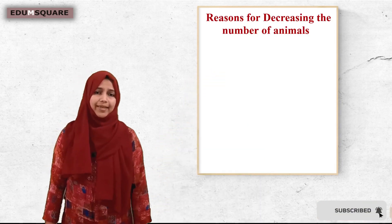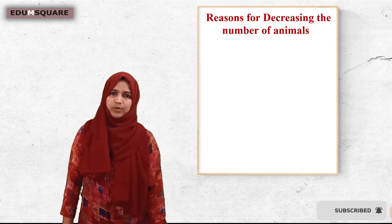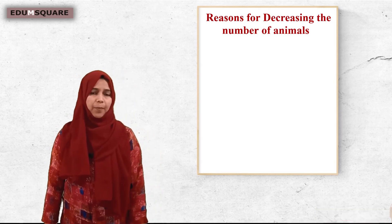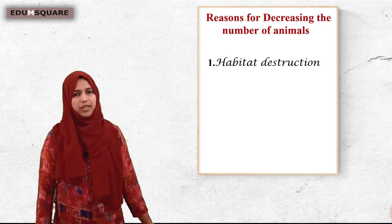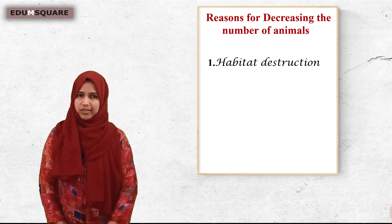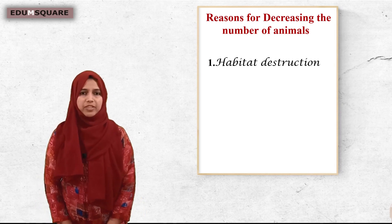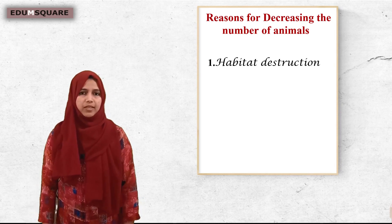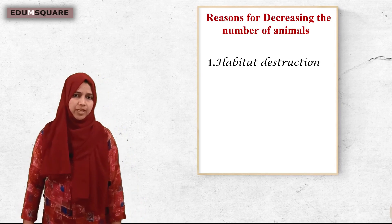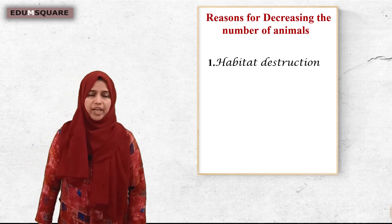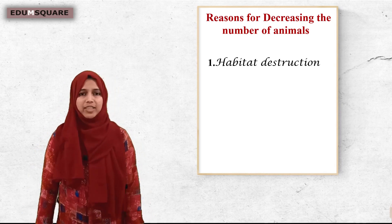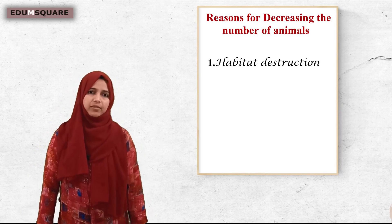The first reason for the decrease in number of animals is habitat destruction. What is habitat? The place where a living thing lives — that is called habitat.